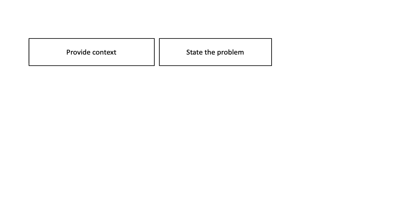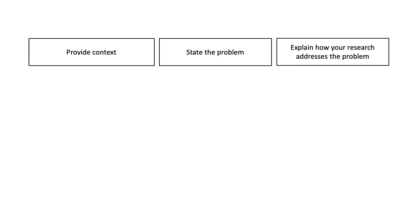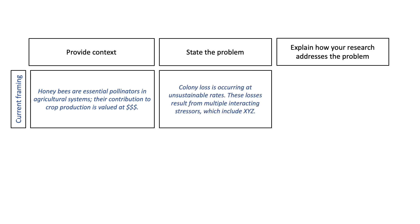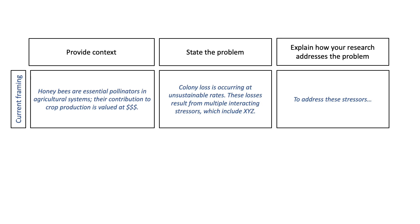Let's walk through one example of what that might look like. When we introduce our research, we start by providing context, then state the problem, and talk about how our research will address that problem. Currently, when honeybee researchers talk about honeybee health, we start by stating that honeybees are essential pollinators in agricultural systems, their contribution to crop production is valued at so many billions of dollars. We then describe the problem: colony loss is occurring at unsustainable rates, resulting from multiple interacting stressors. And then we talk about how our research will help beekeepers and honeybees manage or overcome one or several of those stressors.